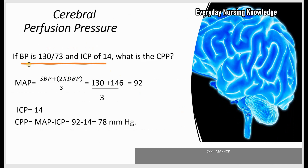Now, if a patient's blood pressure is 130 over 73 and ICP is 14, what is the cerebral perfusion pressure? In this case, you have a systolic and diastolic blood pressure, but you don't have a MAP. So you will calculate MAP using the formula: systolic plus 2 times diastolic, divided by 3.